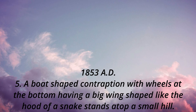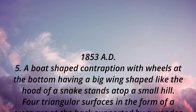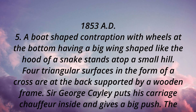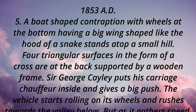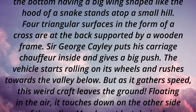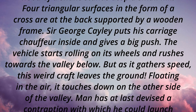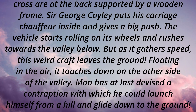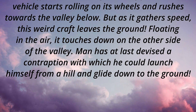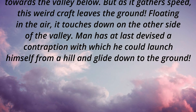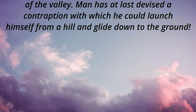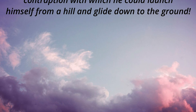1853 AD: A boat-shaped contraption with wheels at the bottom, having a big wing shaped like the hood of a snake, stands atop a small hill. Four triangular surfaces in the form of a cross are at the back, supported by a wooden frame. Sir George Cayley puts his carriage chauffeur inside and gives a big push. The vehicle starts rolling on its wheels and rushes towards the valley below. As it gathers speed, this weird craft leaves the ground, floating in the air. It touches down on the other side of the valley — man has at last devised a contraption with which he could launch himself from a hill and glide down to the ground.